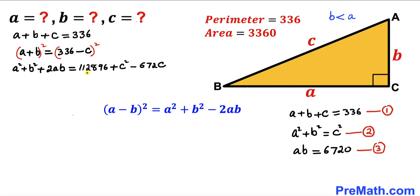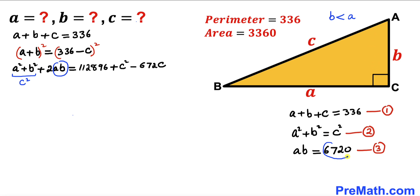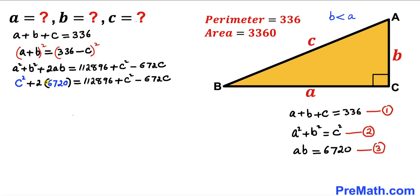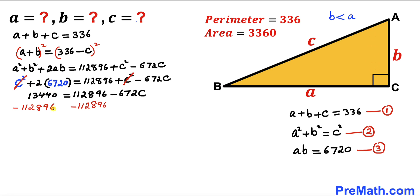The right-hand side becomes 112,896 plus c squared minus 672c. From equation two we know a squared plus b squared equals c squared, so we replace a squared plus b squared with c squared. From equation three, a times b equals 6720, so we substitute that as well. The c squared terms cancel out, and 2 times 6720 gives us 13,440.